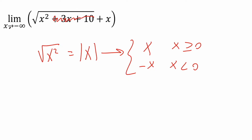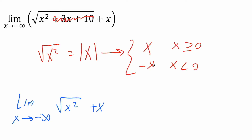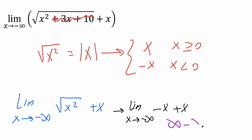Now we're dealing with the limit as x approaches negative infinity, so it's going to behave like the negative x case. We have the limit as x approaches negative infinity of the square root of x squared plus x, but the square root of x squared is like negative x. So rewriting, we get negative x plus x. If you replace x with negative infinity, you get negative of negative infinity, which is infinity, plus negative infinity — that's an indeterminate form, a big red flag that you have to approach this problem differently. You can't just say the limit is zero when you have infinity minus infinity.